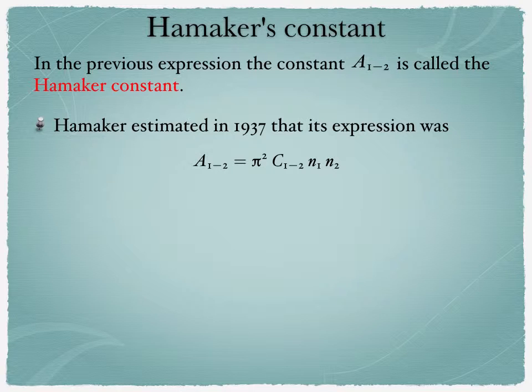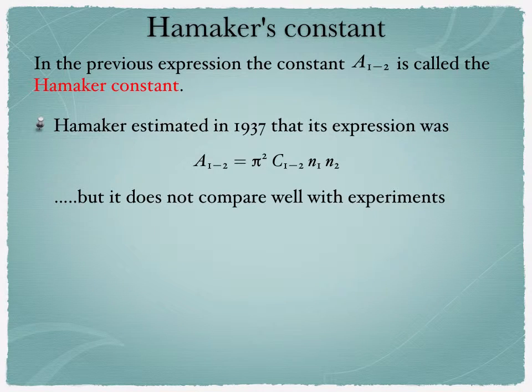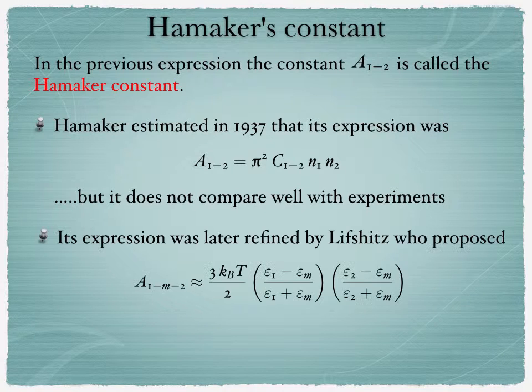Now c12 here would be the constant associated to the interaction between two molecules in vacuum. It turns out that if you use this particular expression, the problem is that it doesn't compare well with experiments. It is sometimes two or three orders of magnitude off from the experiments. So that's one of the issues. And the other issue is that it does not account for what's going on if these colloids are interacting through another medium than vacuum.